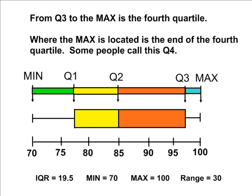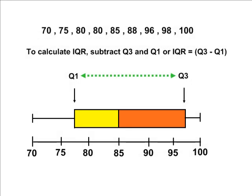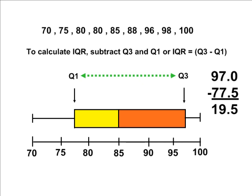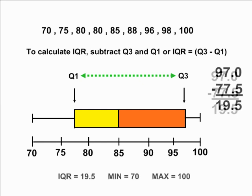With any box and whisker plot, you should also be able to identify the IQR, or interquartile range. The interquartile range is the distance from Q1 to Q3 — the middle two quarters of your data. Because Q3 is located at 97 and Q1 is located at 77.5, we subtract these two values to get our IQR. The difference is 19.5, so the interquartile range has a value of 19.5.